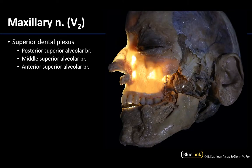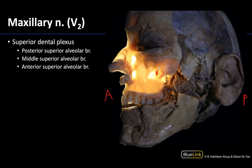Let's work through the V2 branches that will afferently serve the teeth. Understanding what is anterior and what is posterior is important — anterior is towards the incisors and nose, and posterior is towards the molars and ear region. The posterior superior alveolar branch, or PSA, is heading in this direction towards the molars, which you can see here.